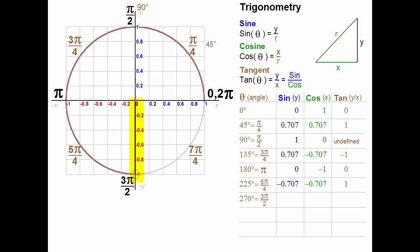3 quarters of the way around the circle, at 3 pi over 2 radians, we can see that the value of y is minus 1. That's the sine. x is 0, which is the cosine. The tangent is minus 1 over 0. Again, math can't divide by 0, so the tangent is undefined.